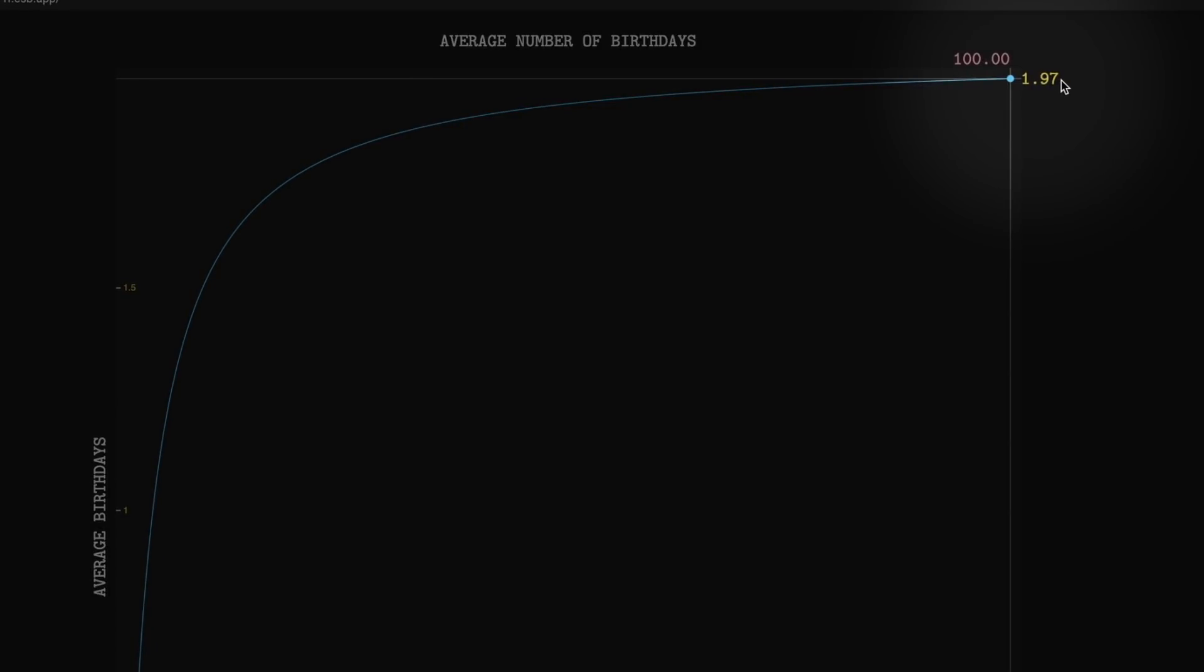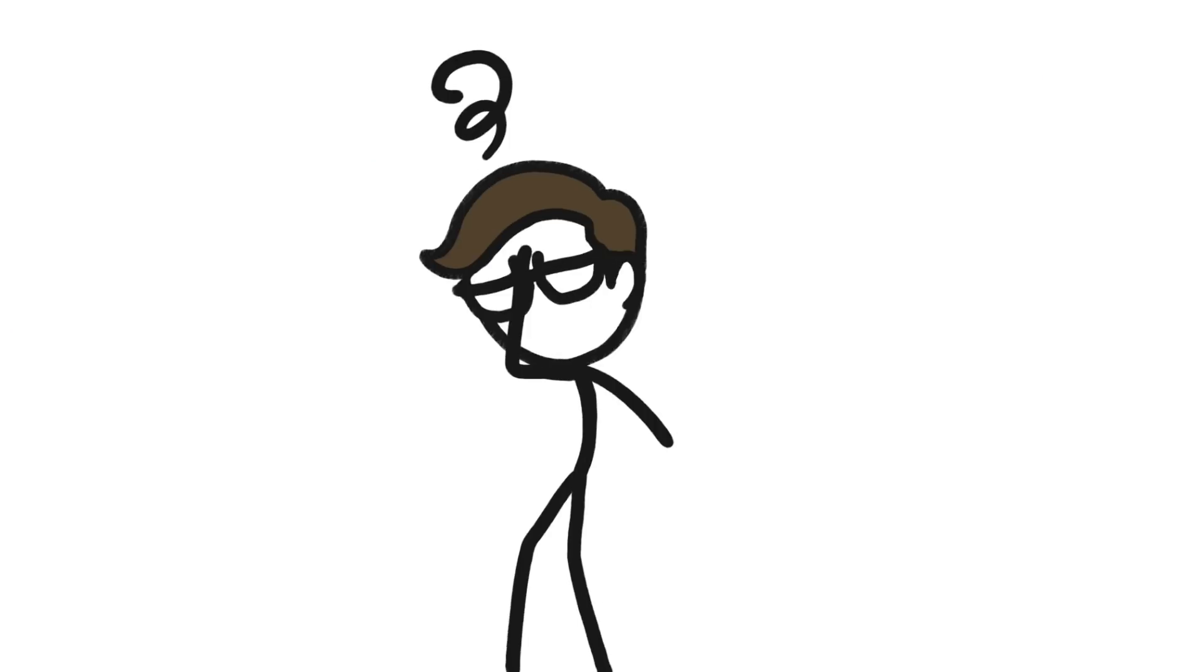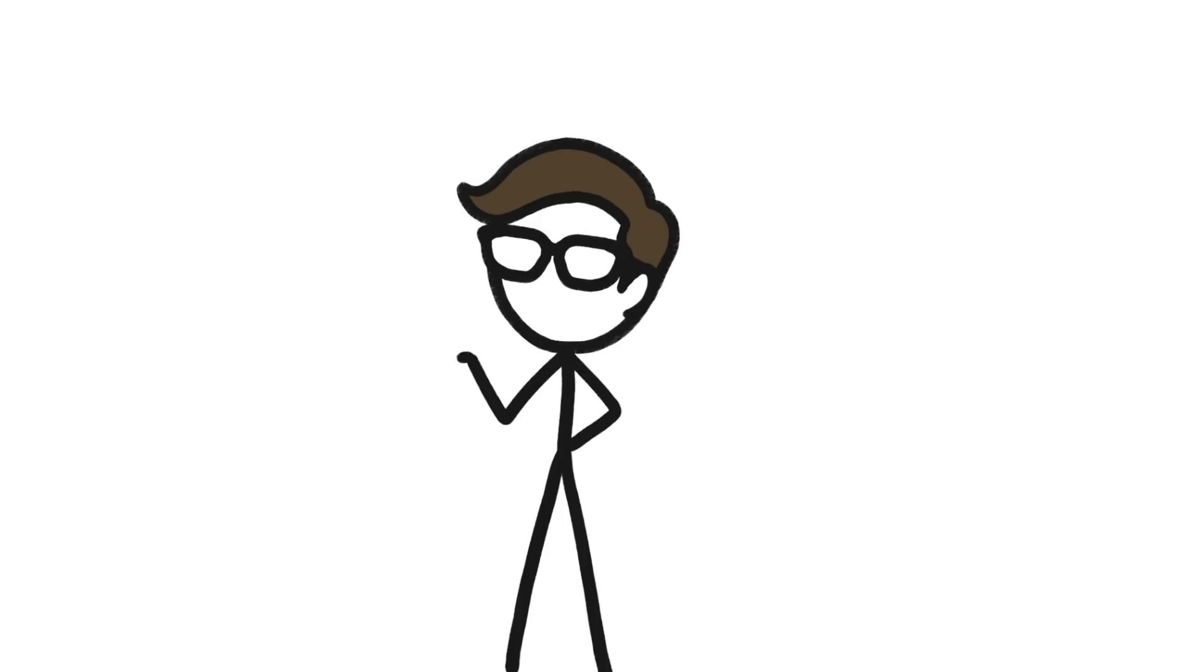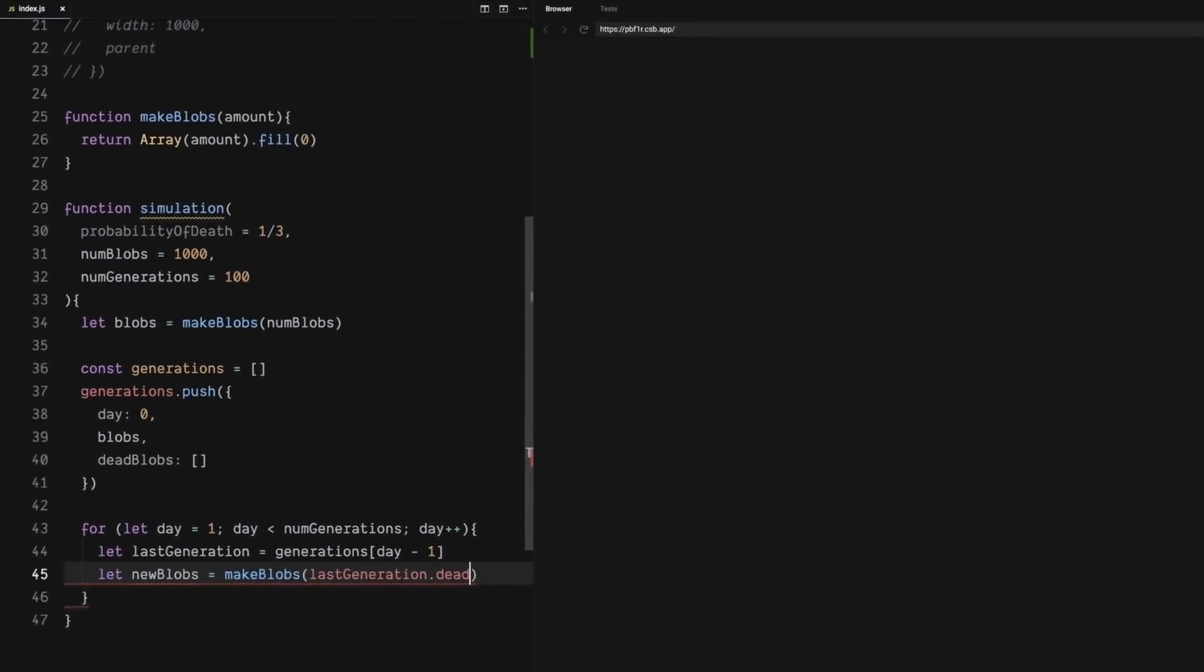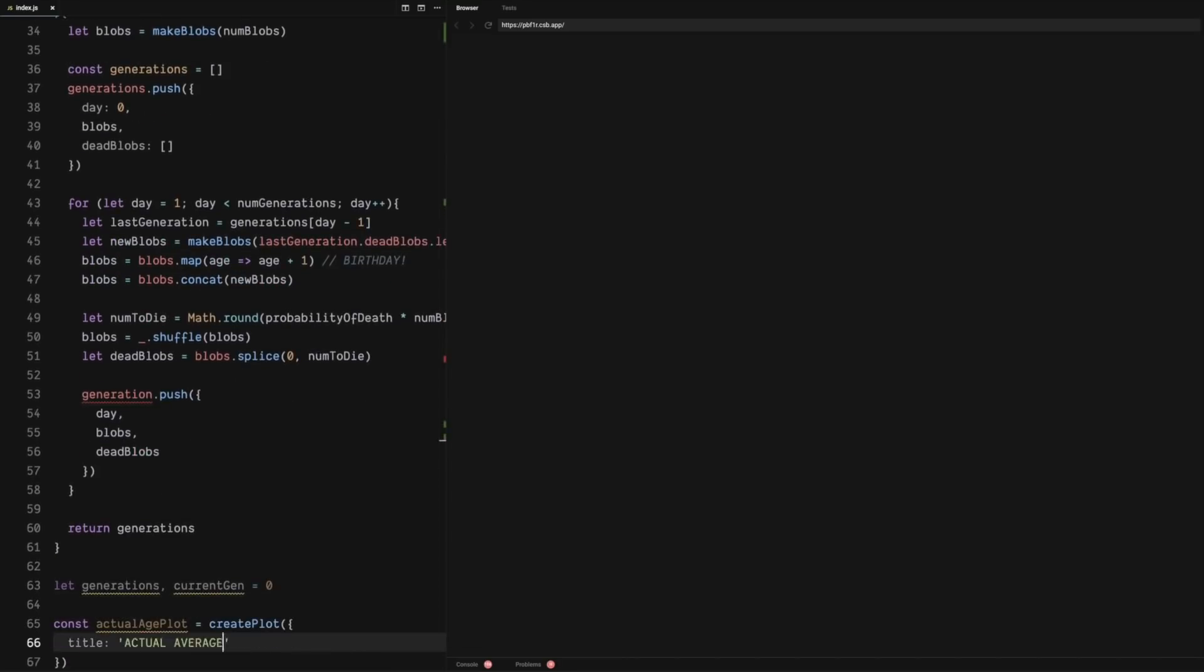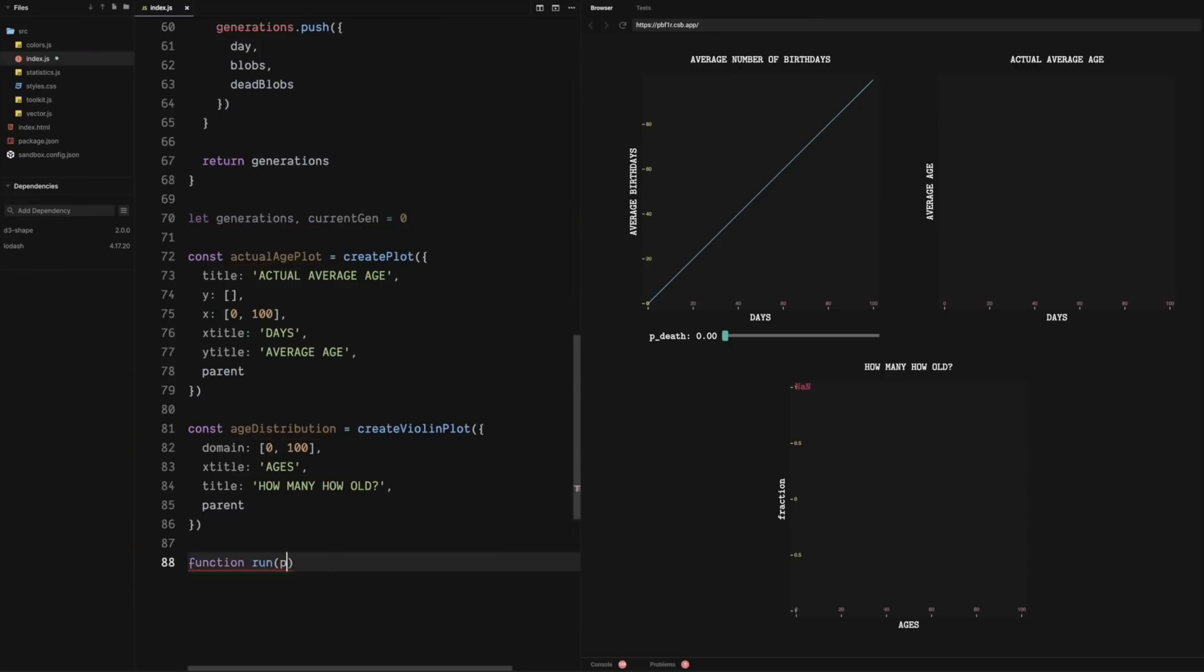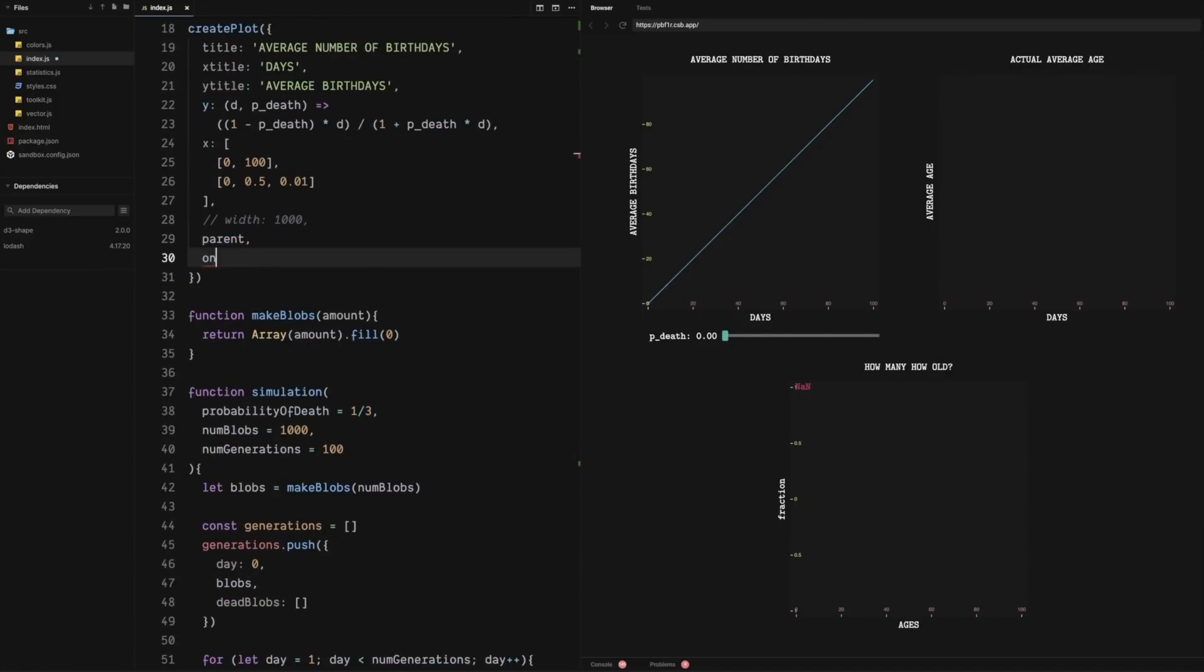If I were a sane person, I'd stop here. But no, I had to go and check the theory against the experiment. Well, I suppose I don't call this channel Minute Labs for nothing. Let's set up a mini simulation that starts with a thousand blobs, which are really just numbers representing their age, and every day, let's randomly kill off a fraction of them and replace them with new blobs. Now we can look at how the average age actually changes over time, under ideal conditions, and look at how those ages are distributed.